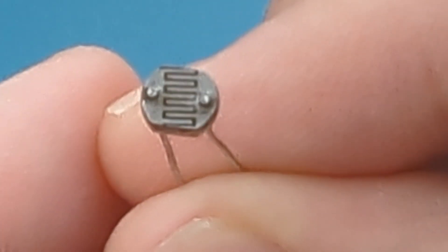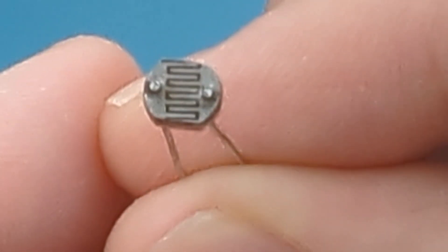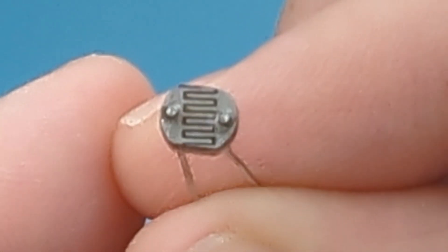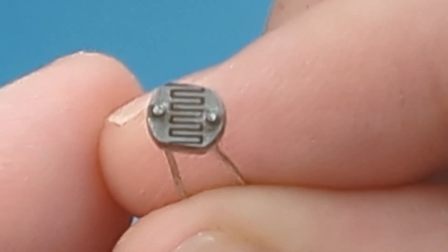The technical term for this change in resistance is photoconductivity, a game changer in circuits responding to light conditions. Now let's break down how an LDR works.